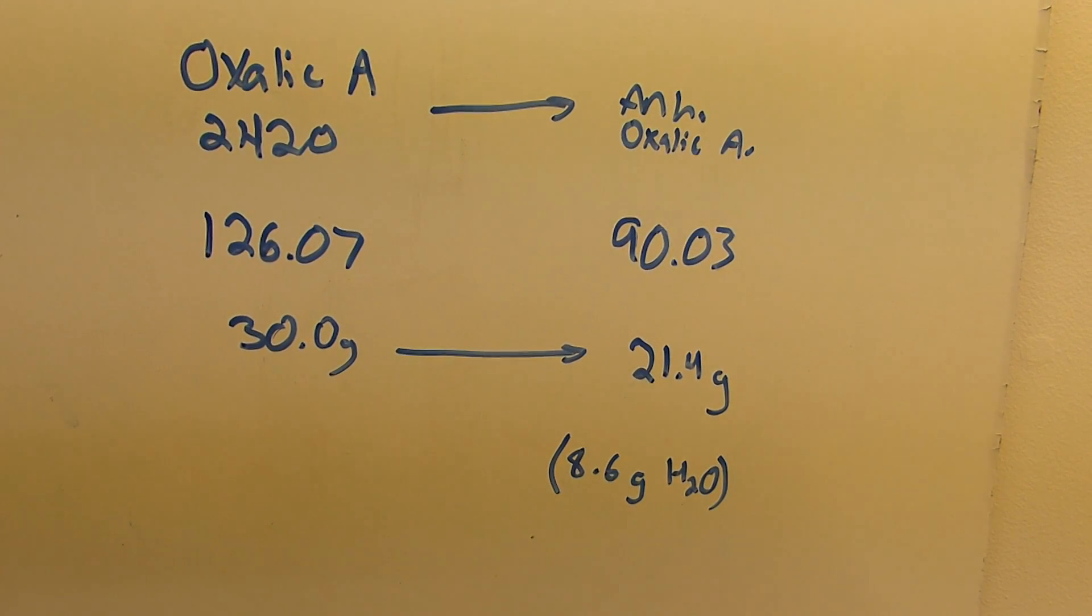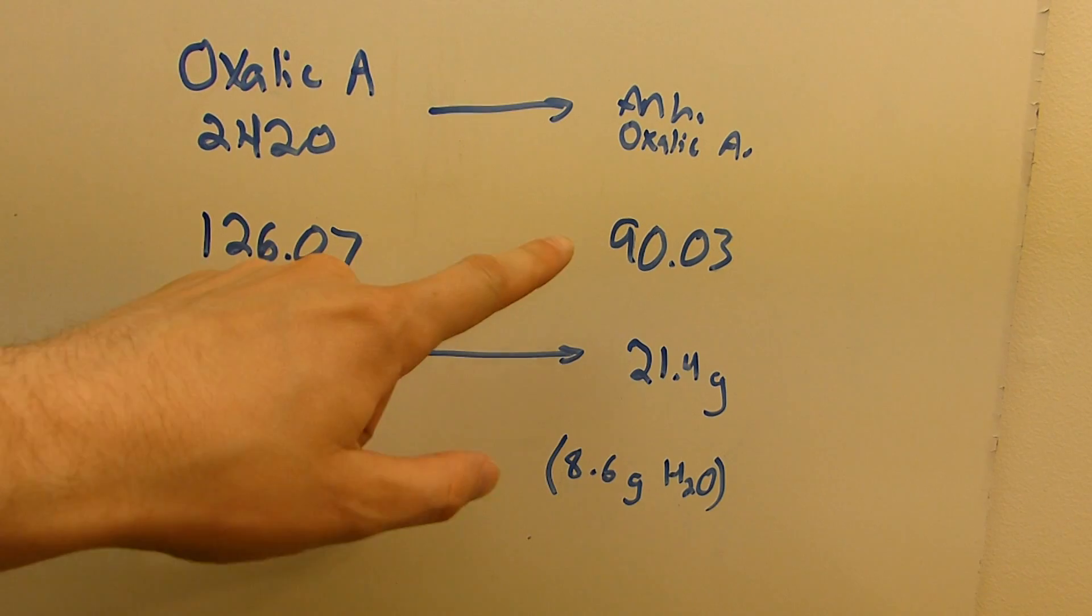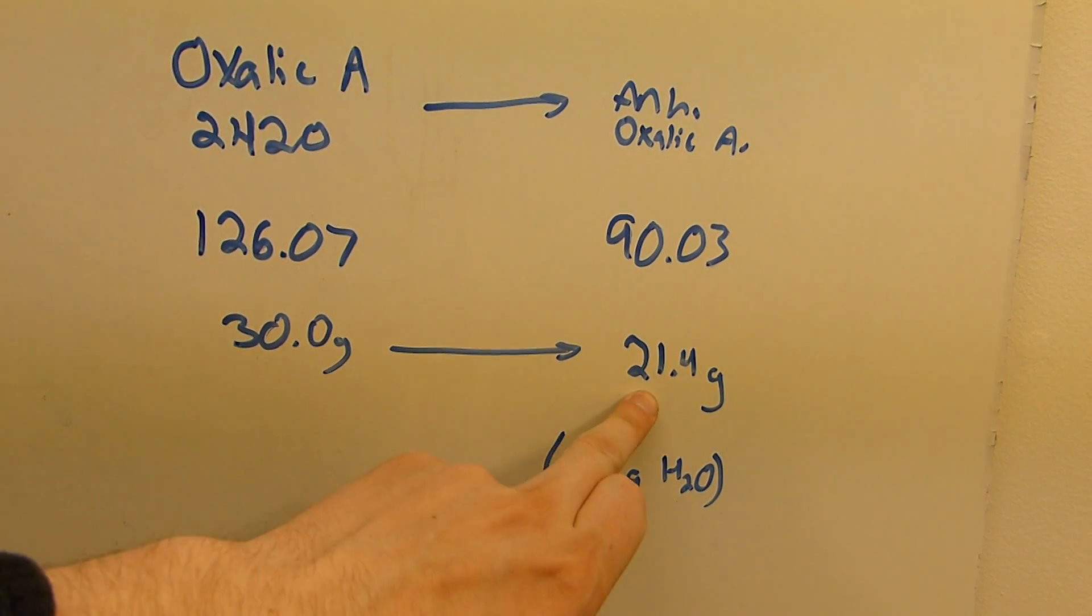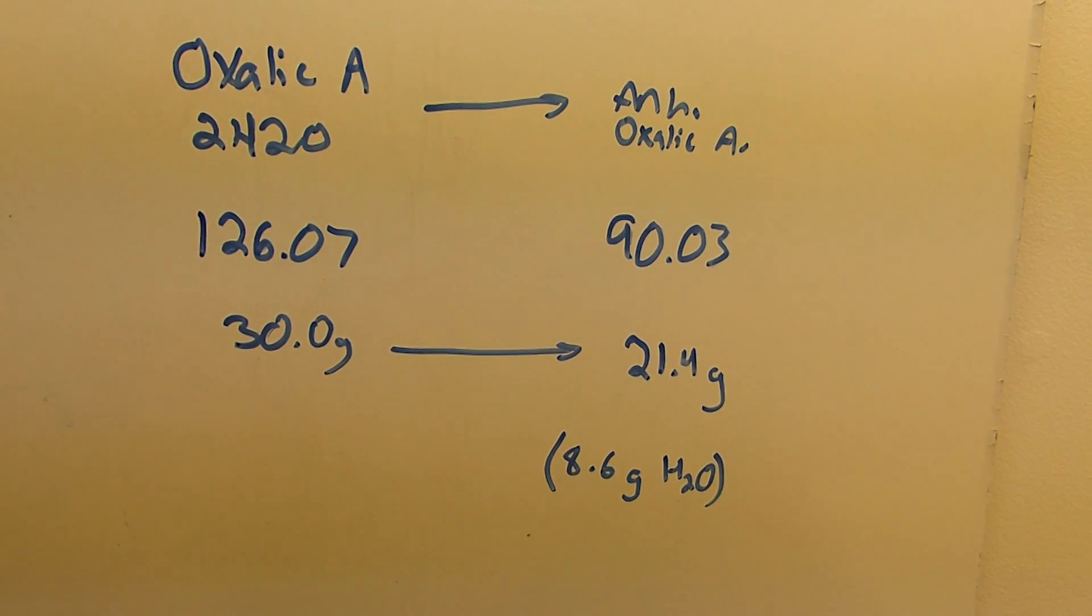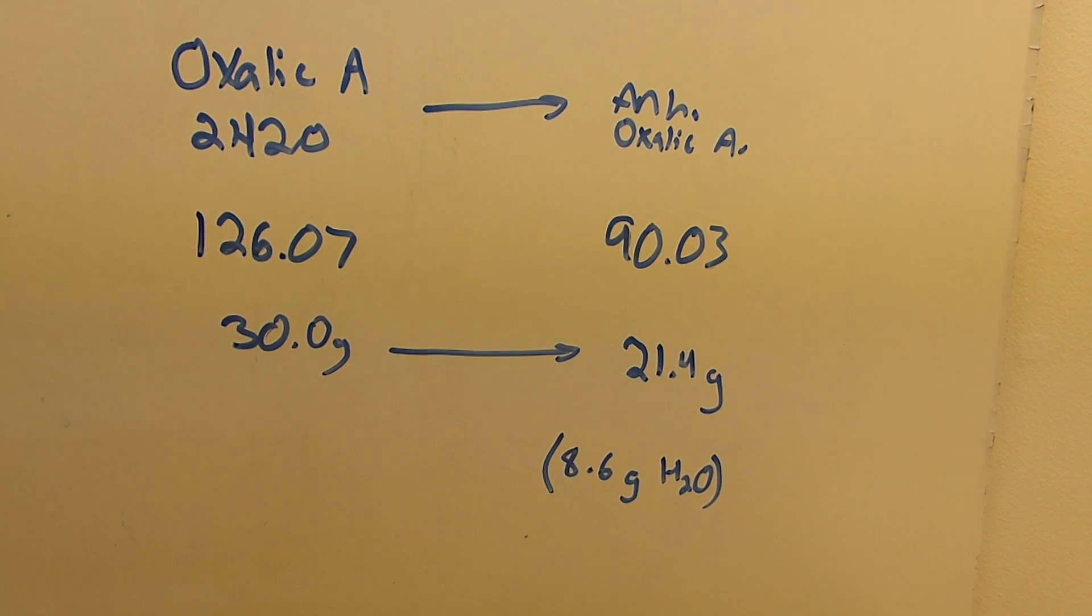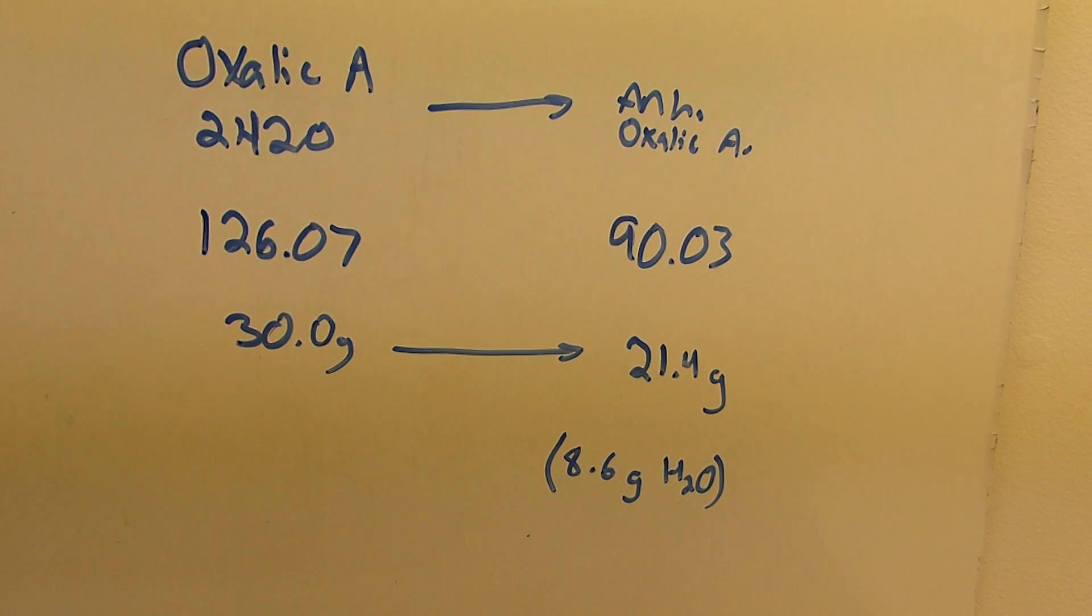While we're waiting for things to get started, I've done some quick math here. I found the molar mass of oxalic acid dihydrate and the acid itself, and based on 30 grams of starting oxalic acid, it looks like we're going to end up with 21.4 grams of anhydrous oxalic acid, assuming we can remove all 8.6 grams of water. And we can check this by draining the Dean Stark Trap and then weighing that water and seeing if we have, in fact, recovered all 8.6 grams.